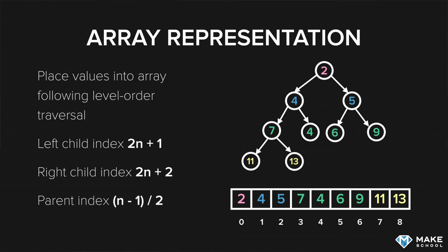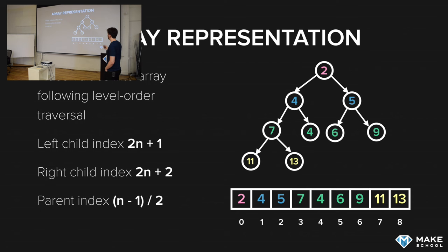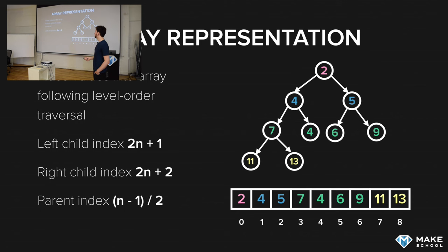The root item is at index zero, then the first child at index one, then the right child of the root at index two, etc. How do we then jump to the children of each item? If we do it as a node we can say root.left to get the left child. When we store it in an array, we can calculate the child index and jump there directly.